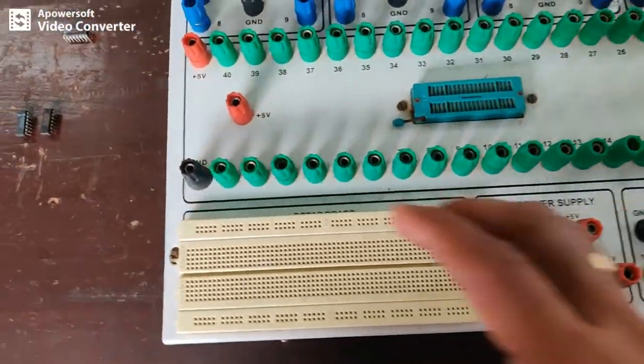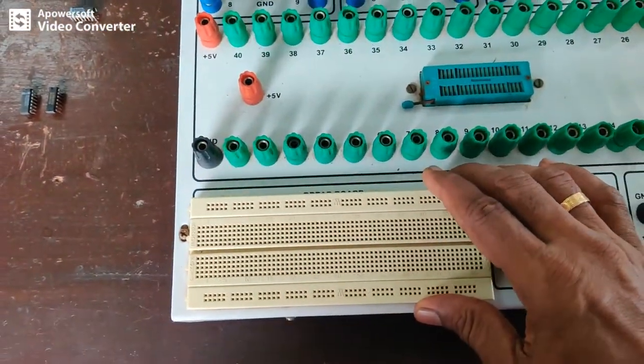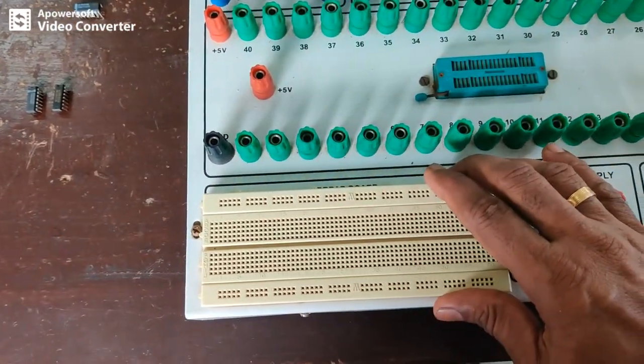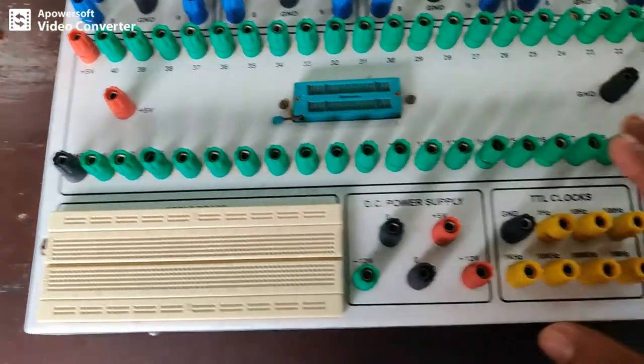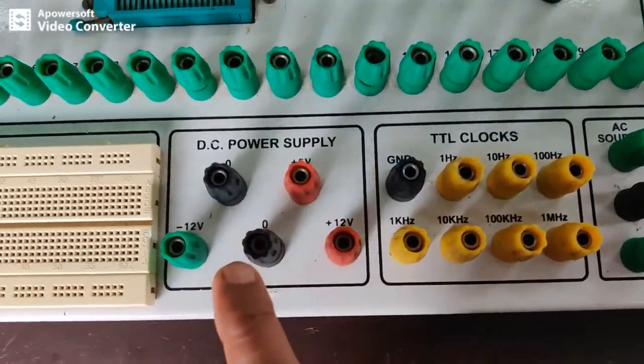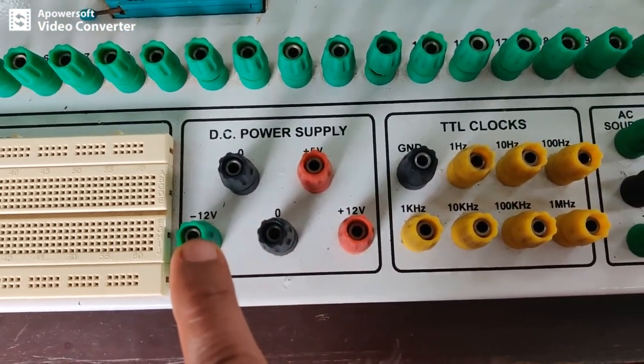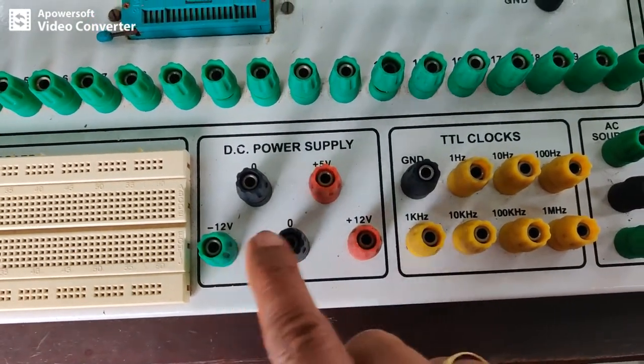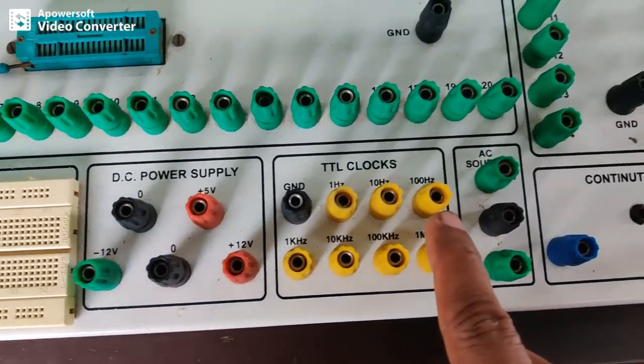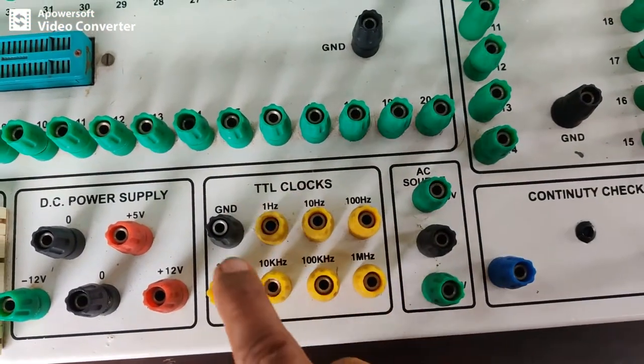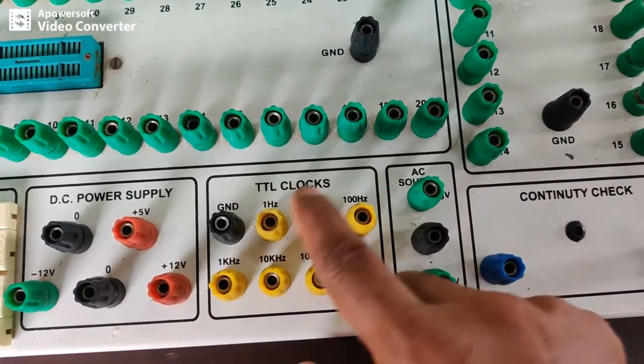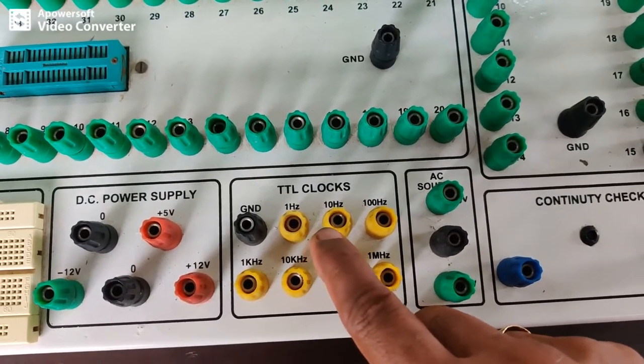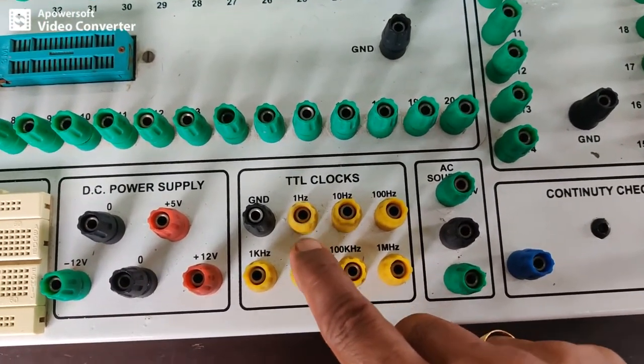Other than that we have breadboard to connect various components like various active and passive components you can connect here along with these circuits. And other than that we have DC power supply section. You can give plus 5 volt to the IC, minus 12 volt, plus 12 volt. Then we have something called the clock section.